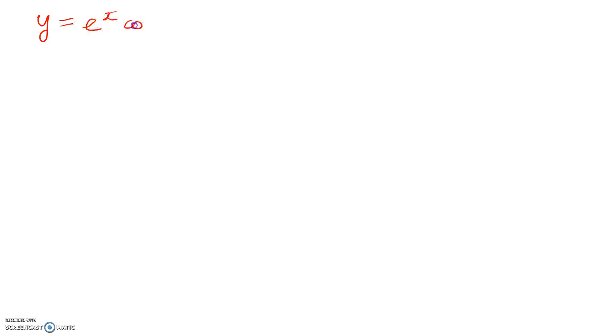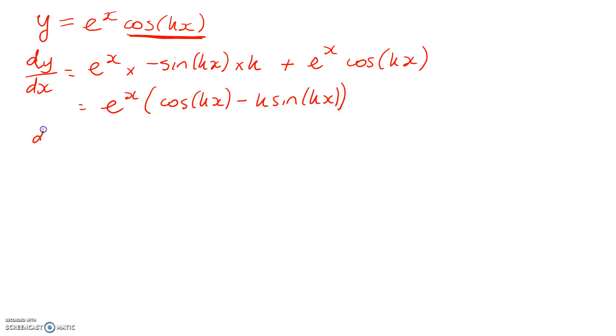Okay, so starting off, what do we have? y is equal to e to the x cos of kx. So differentiating, I'm going to be using the product rule. The first function times the derivative of the second. So here I need the chain rule. I'm going to have negative sine kx times k. Plus, the other way around, differentiate the e to the x and leave the cos of kx. We can clean that up, and we'll get e to the x times cos kx minus k sin kx.